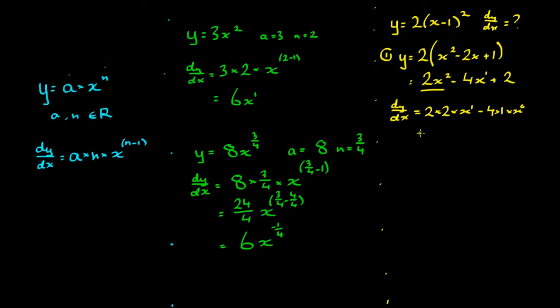If you ever derive a constant like 2 or 6 or Euler's number or pi it's just 0. So this expression simplifies down to 4x minus 4.